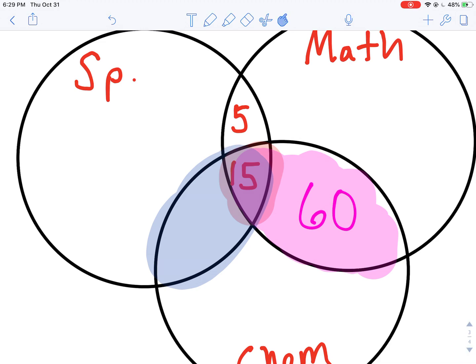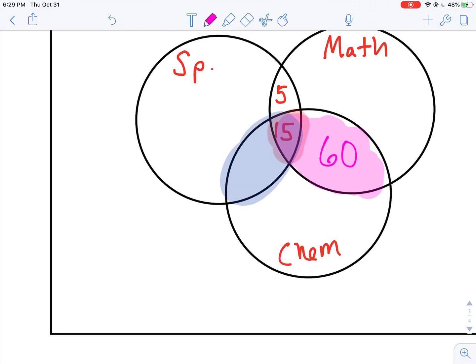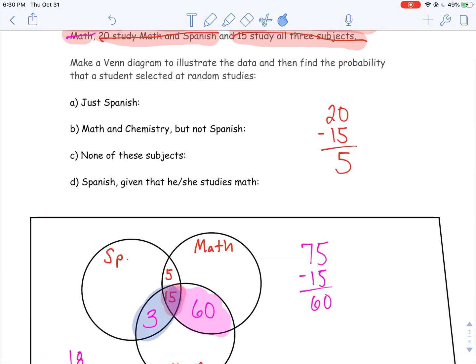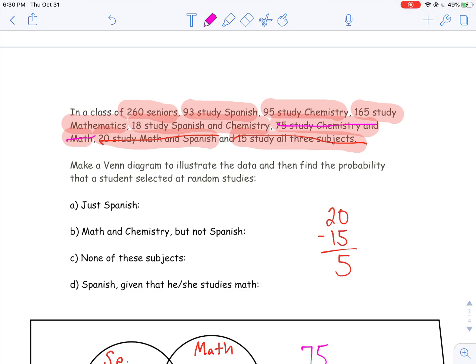They're telling me it's 18, but remember that 18 includes the 15 who take all three. So I'm going to do 18 minus 15, which gives me 3. And I've got that out of the way.